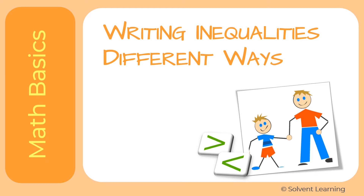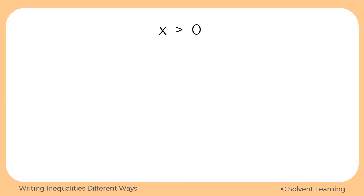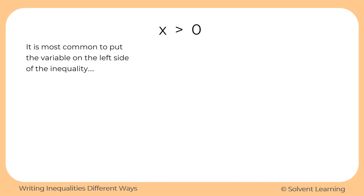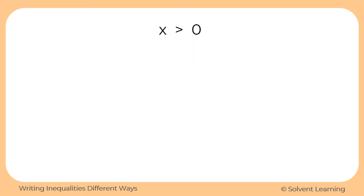In this video, we're going to look at the different ways that we can write inequalities. Here we have x is greater than 0, and notice that our variable x is on the left side. This is the most common way to write it — we normally put the variable on the left side of the inequality. But you don't have to; there is another way to write it. Let's look further into this inequality and what it actually represents, and then we'll look at the other way.